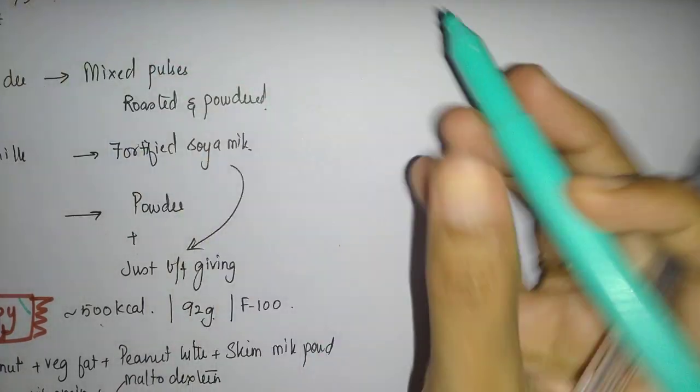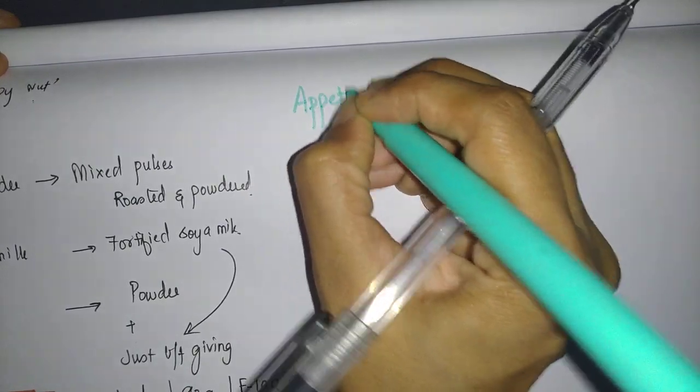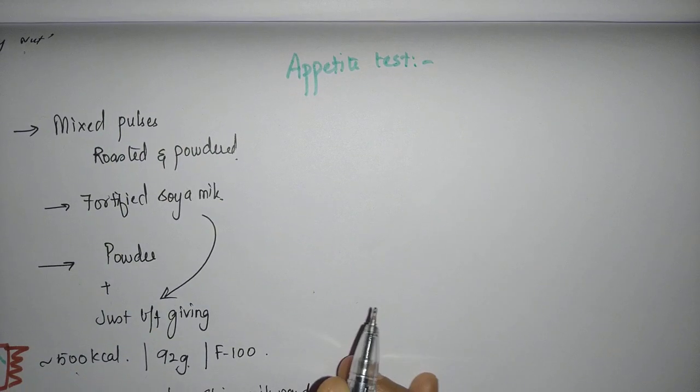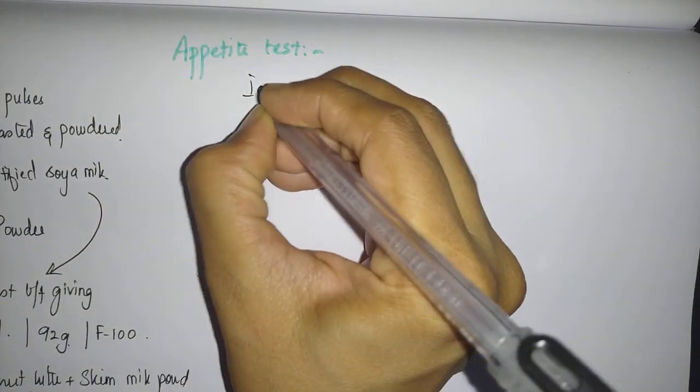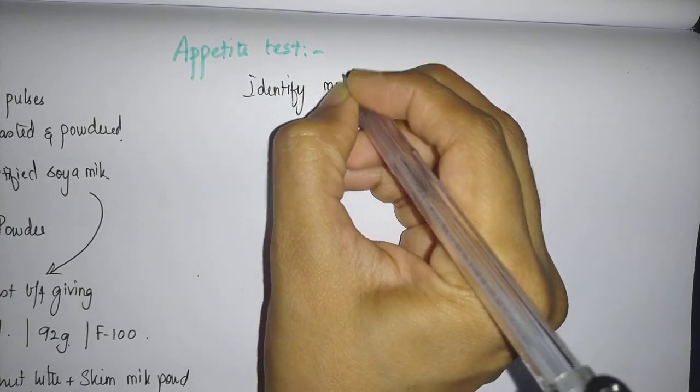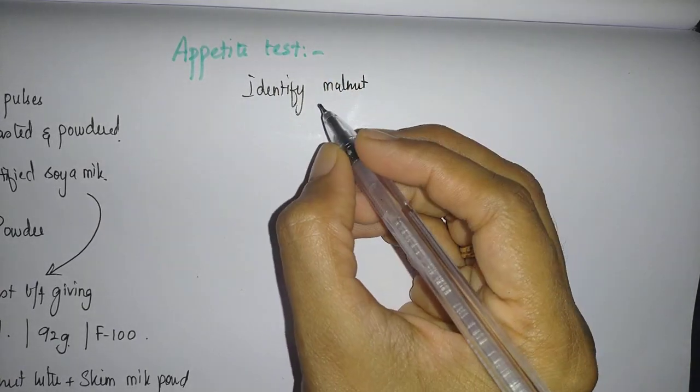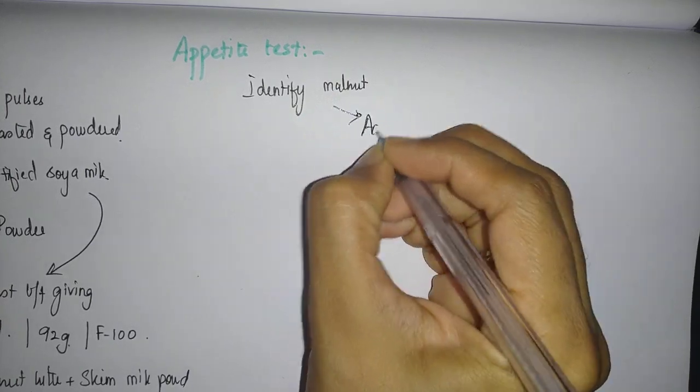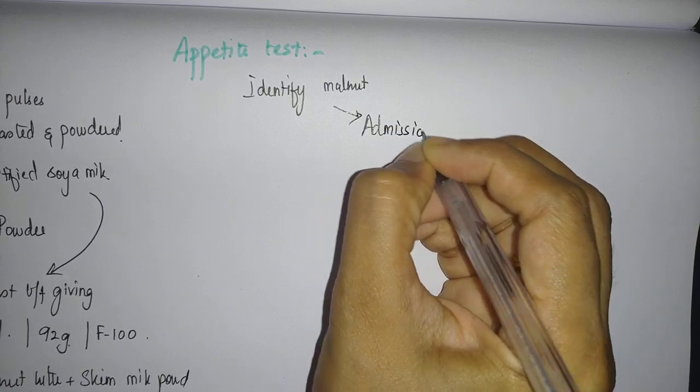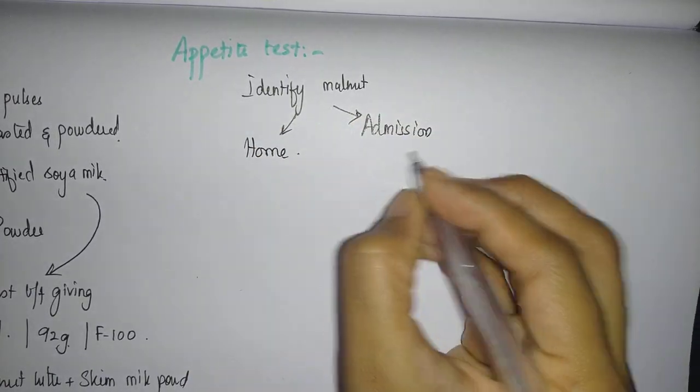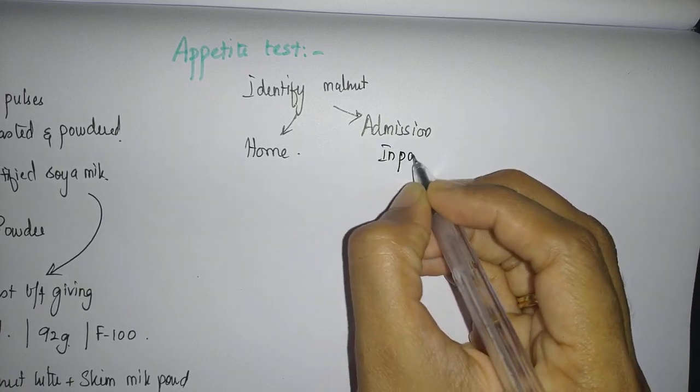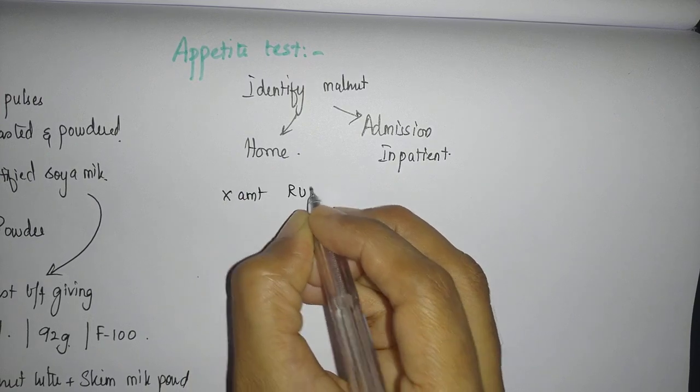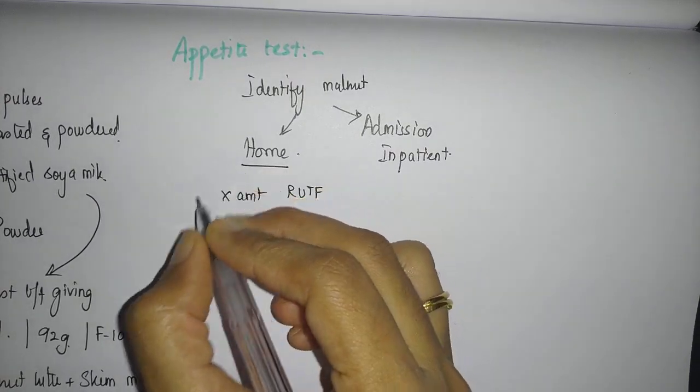What about the appetite test? You can read from your standard textbooks, but to make it short, the appetite test is given to identify a child with malnutrition and whether that child can take the food or not. Somebody who is not taking the food will require admission. So whether the child is going to be managed at home or inpatient basis—if the child finishes a certain amount of RUTF, then the child is good to go home and can be followed up on an outpatient basis.